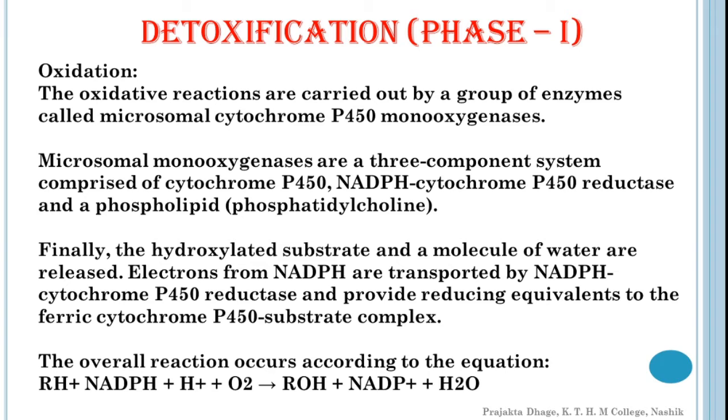Microsomal Monooxygenases are a three component system comprised of Cytochrome P450, NADPH Cytochrome P450 Reductase and Phospholipid which is Phosphatidylcholine. The details of catalytic events mediated by cytochrome P450 are not fully understood. The substrate first binds to oxidized cytochrome P450, the enzyme substrate complex undergoes reduction and then interacts with oxygen. Finally, the hydroxylated substrate and a molecule of water are released. Electrons from NADPH are transferred by NADPH Cytochrome P450 Reductase and provide reducing equivalents to the ferric cytochrome P450 substrate complex.